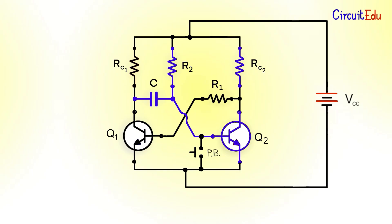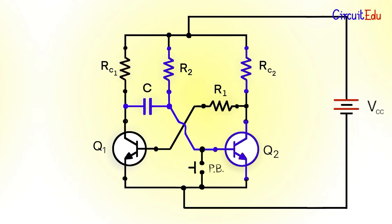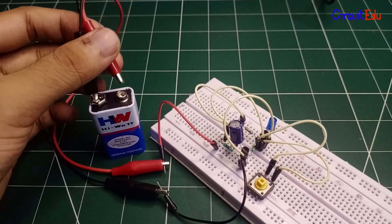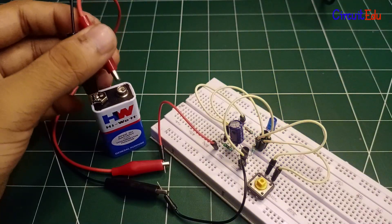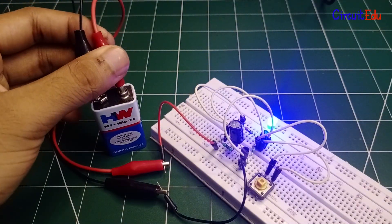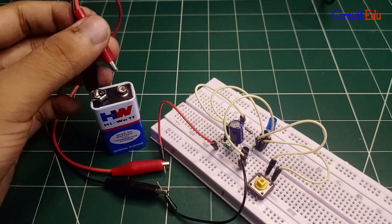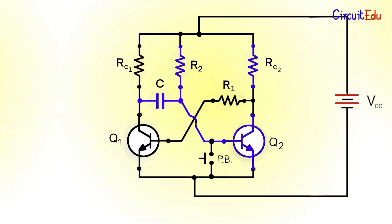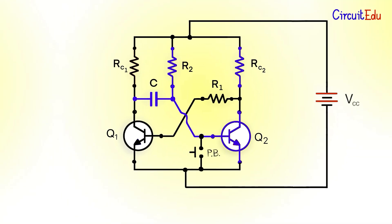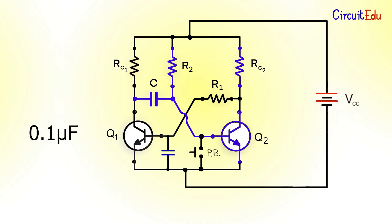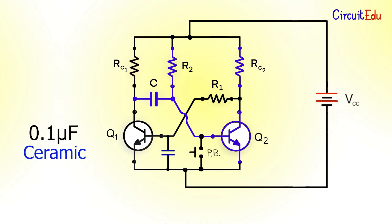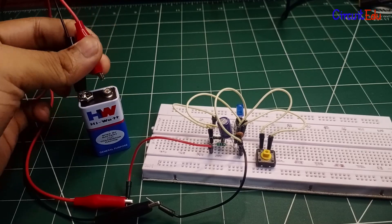When powering up, there is a higher chance that Q2 turns on first because of the capacitor. However, if you de-energize and re-energize the circuit, it can sometimes go into the unstable state even without triggering — because the capacitor may not be fully discharged during power-up. To be absolutely sure Q2 turns on initially, connect a small capacitor such as a 0.1 microfarad ceramic capacitor across base and emitter of Q1. This way, Q2 always turns on first during power-up.